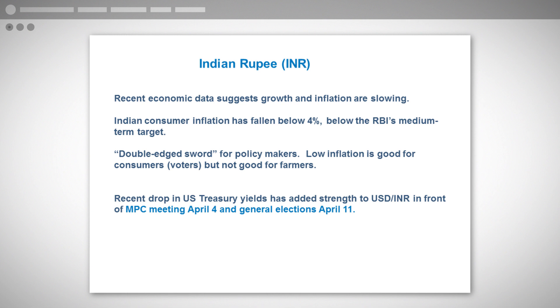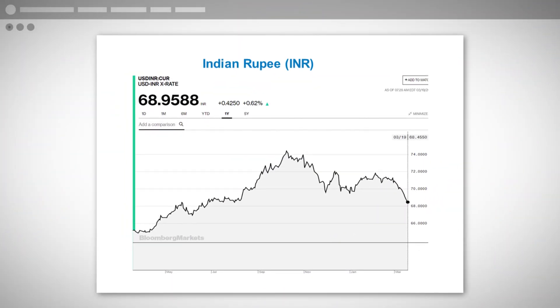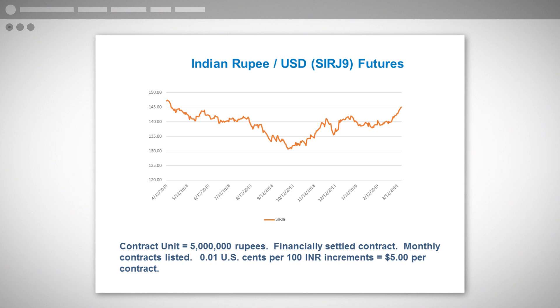This can be a double-edged sword for policy makers, because low inflation — which is good for consumers who are also voters — isn't necessarily in the best interest of farmers and agricultural producers, who represent a large segment of the economic workforce. Their central policy meeting will be on April 4th, and they also have a nationwide general election the following week. Recent drops in U.S. Treasury yields have given initial strength to the rupee, with the currency pair moving toward the higher end of its trading band below 70 rupees per dollar in rupee terms, and trading above its most recent range in U.S. dollar terms, which is how the futures contract trades.